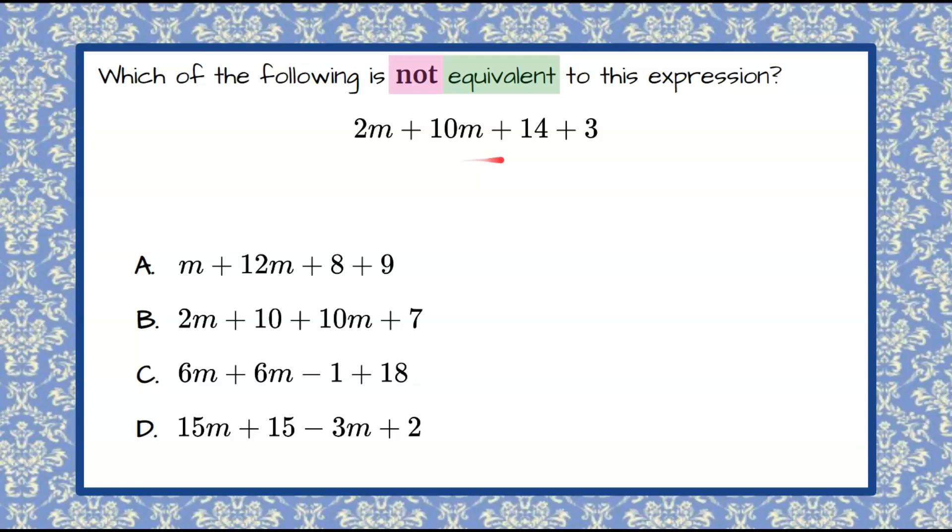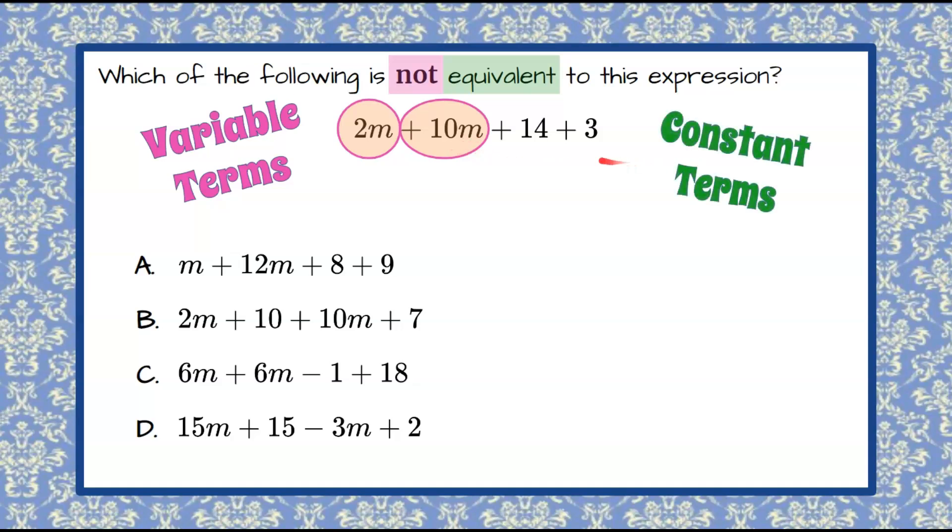So when I look at this expression, it has four terms and we're going to look and notice that we have variable terms, which are 2m plus 10m because there's a constant and a variable. So 2m is 2 times m plus 10 times m or 10m. Then we also have constant terms in this four term expression. We have 14 and 3, meaning it means just 14.